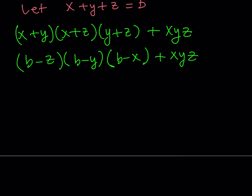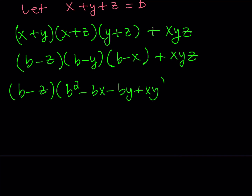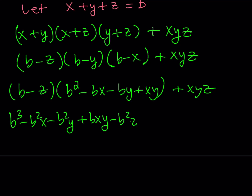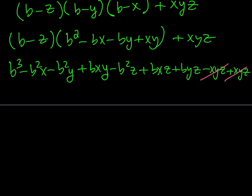So we did get another expression. One of the things you can do is distribute this and see what happens. If you follow the same format, just keep B minus Z alone for now and distribute B squared minus BX minus BY plus XY, and then we have the XYZ. Distributing everything gives me B cubed minus B squared X minus B squared Y. Then distributing further gives plus BXY, and then I get B squared Z plus BXZ plus BYZ. And finally I get minus XYZ, and at the end I have plus XYZ. Notice that XYZ cancels out, so I can just go ahead and cancel them.